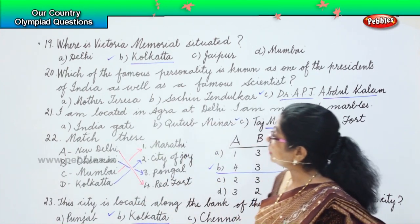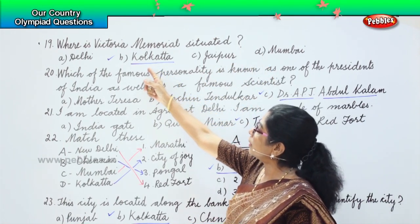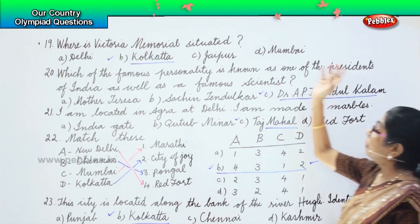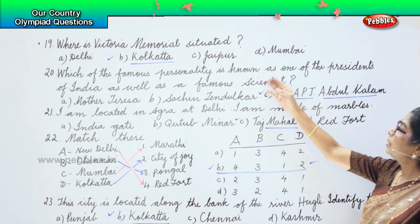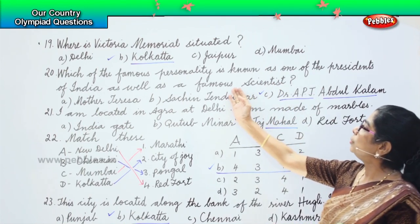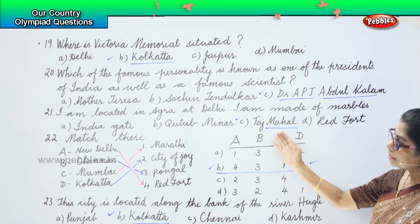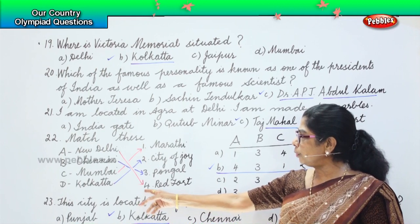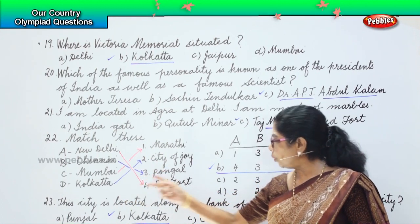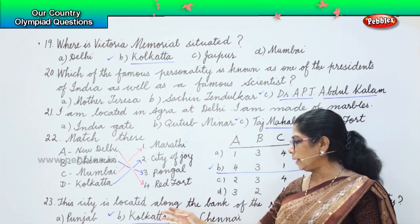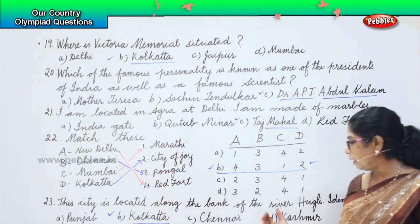Now let's look at all the answers. Victoria Memorial is situated in Kolkata. Dr. A.P.J. Abdul Kalam is the famous personality who was a president of India as well as a scientist. The marble monument in Agra is the Taj Mahal. For the matching: New Delhi — Red Fort, Chennai — Pongal, Mumbai — Marathi, Kolkata — City of Joy, so option B. And the city located along the bank of the river Hooghly is Kolkata.